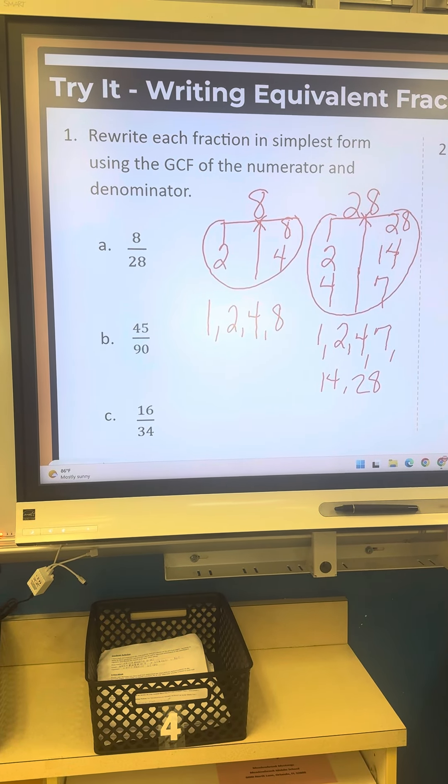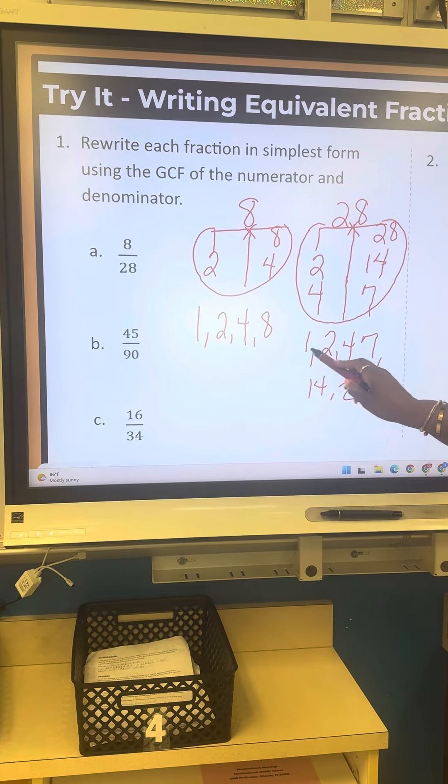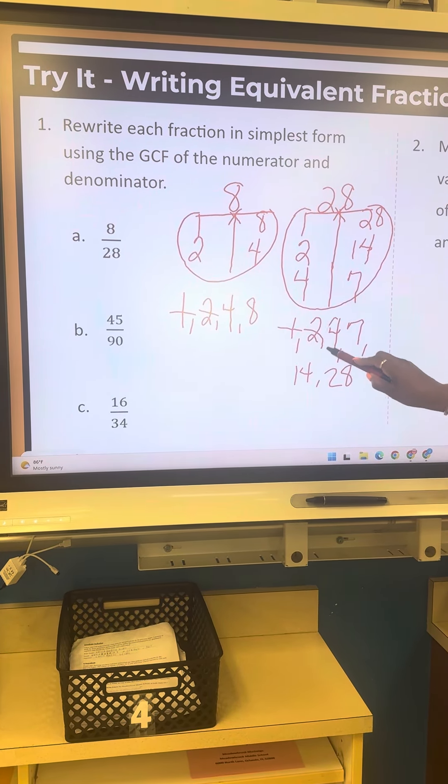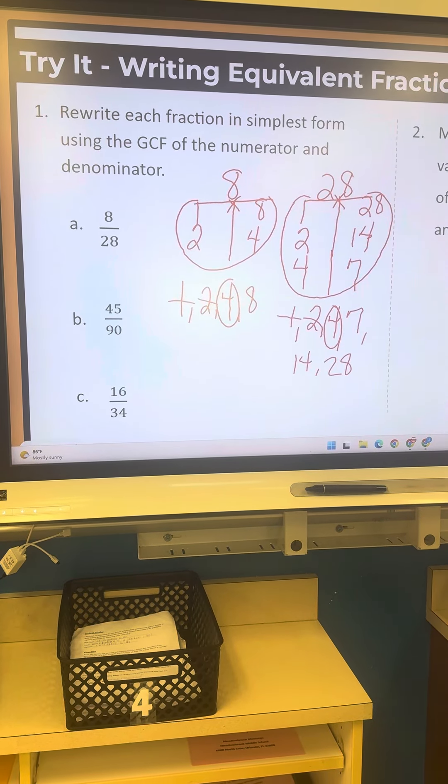Now I need to find out what is the greatest common factor for all of these. I see I have 1, I cross that out, 2, and then I see that 4, I'm circling it because that's my greatest common factor.